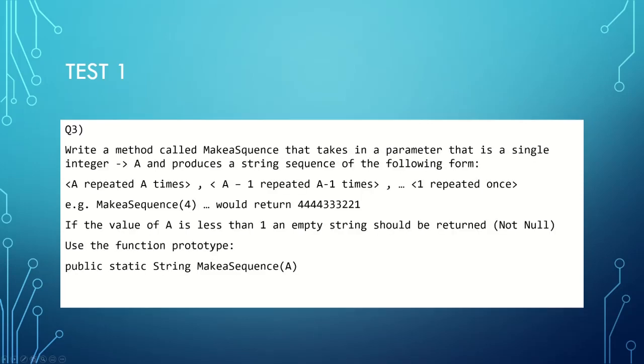Question three. We need to be familiar with for loops and nested for loops. If we're not, go and visit the ScholarHall YouTube channel or ScholarHall.com and have a look at how to do them, because if you're not familiar with them you're going to find this question rather challenging. We need to write a method called makeASequence that takes in a parameter that is a single integer a and produces a string sequence of the following form: a repeated a times, a minus one repeated a minus one times, all the way to one being repeated once.